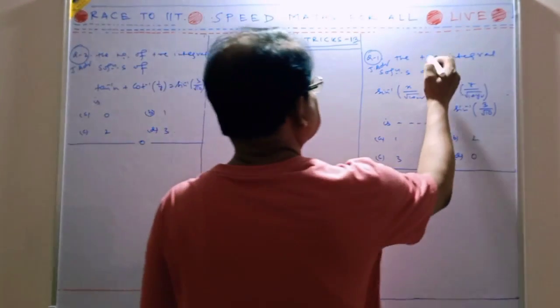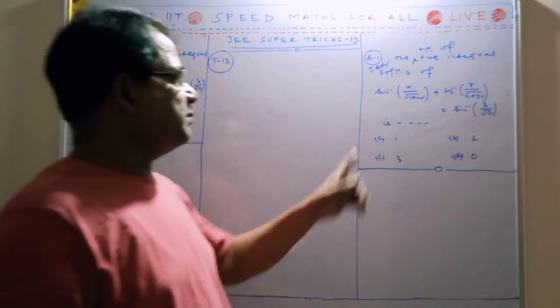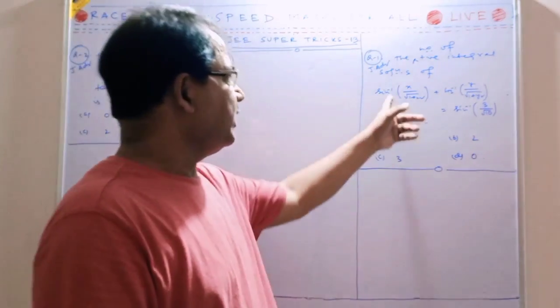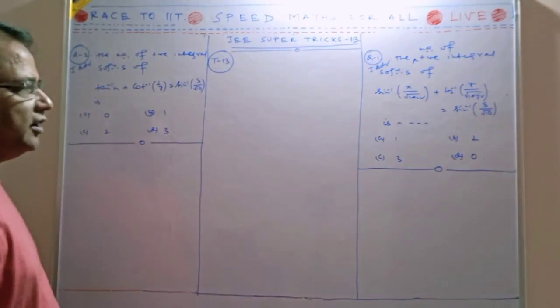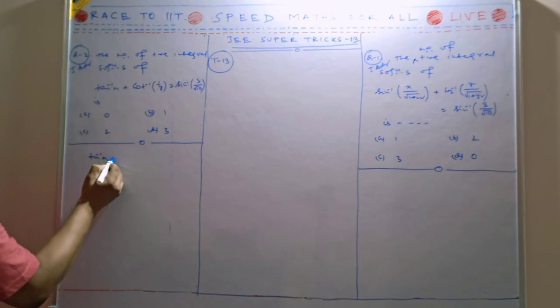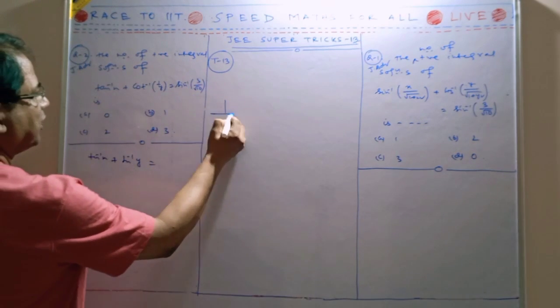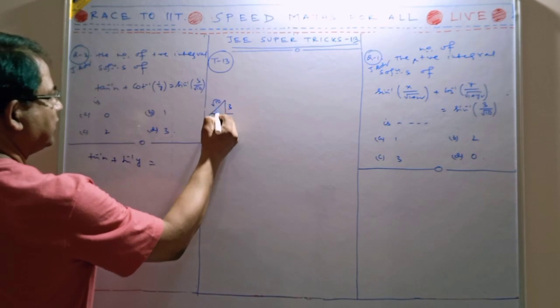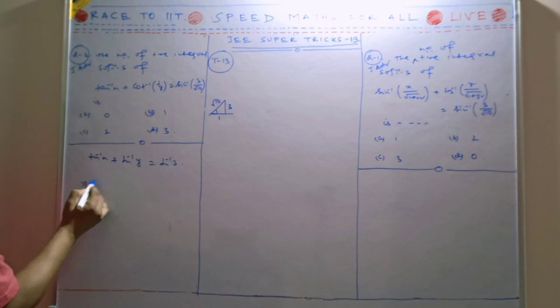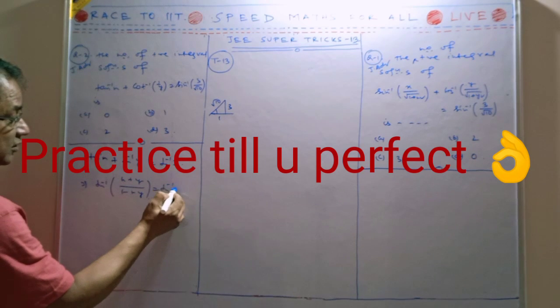The number of positive integral solutions of this: tan inverse x plus tan inverse y equals tan inverse 3. So this is tan inverse of (x plus y) divided by (1 minus xy) equals tan inverse 3.